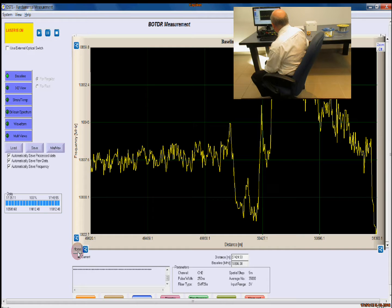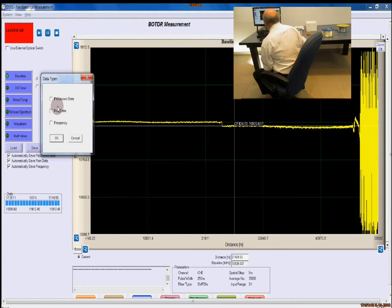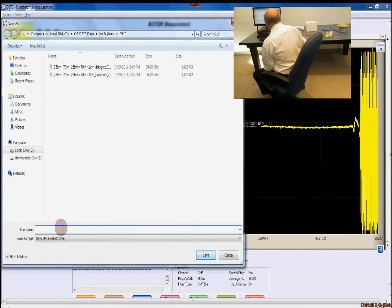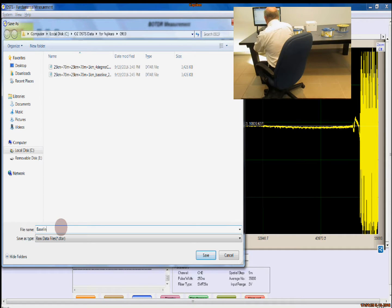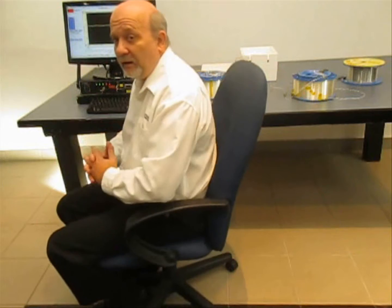Once we're happy with our baseline reading, we can save it. We'll save all the forms of data for our experiment here. Now that we have our baseline reading, we can now demonstrate the system measuring a change in the temperature. We're going to show you how we're going to induce that temperature in our next portion.